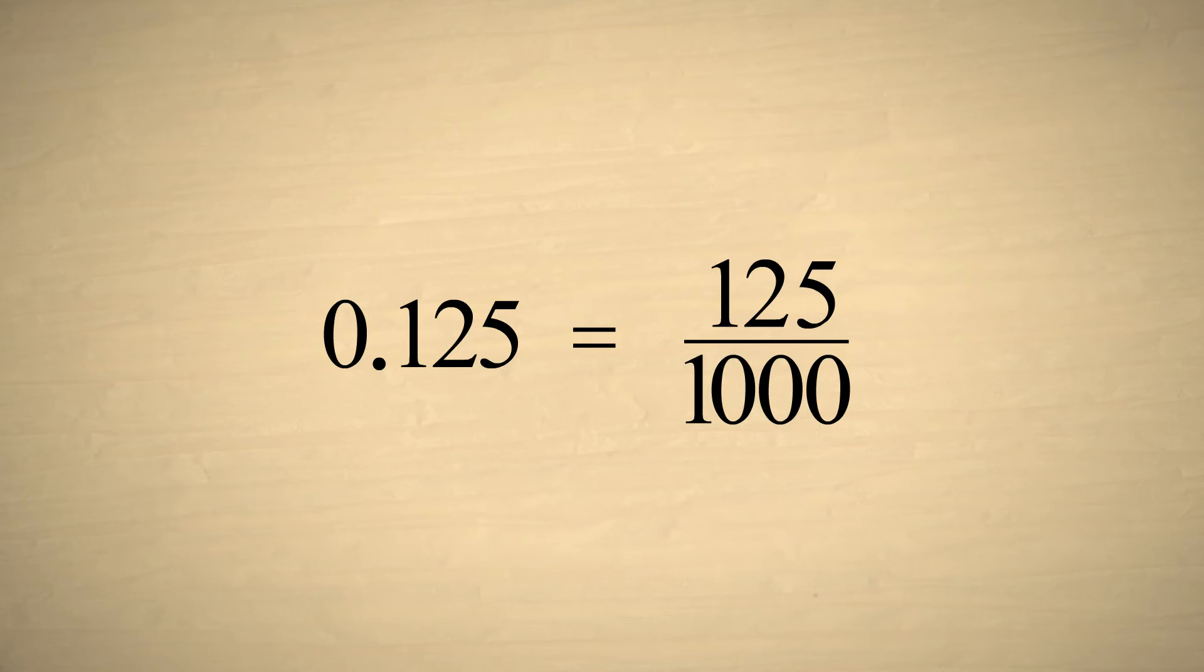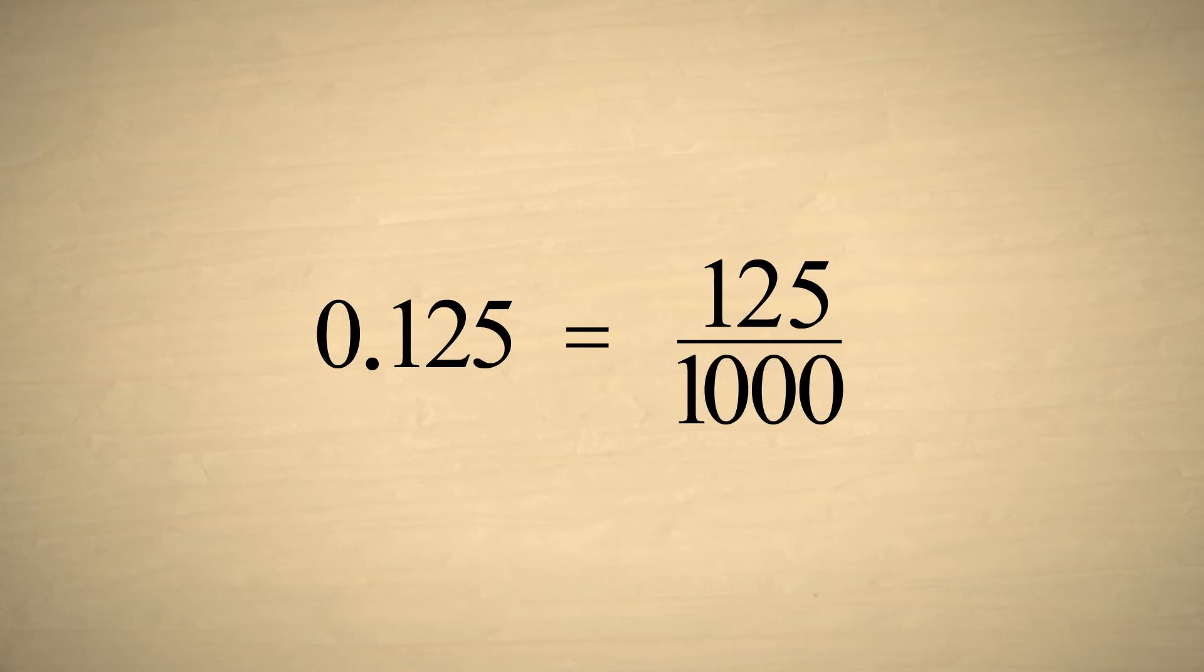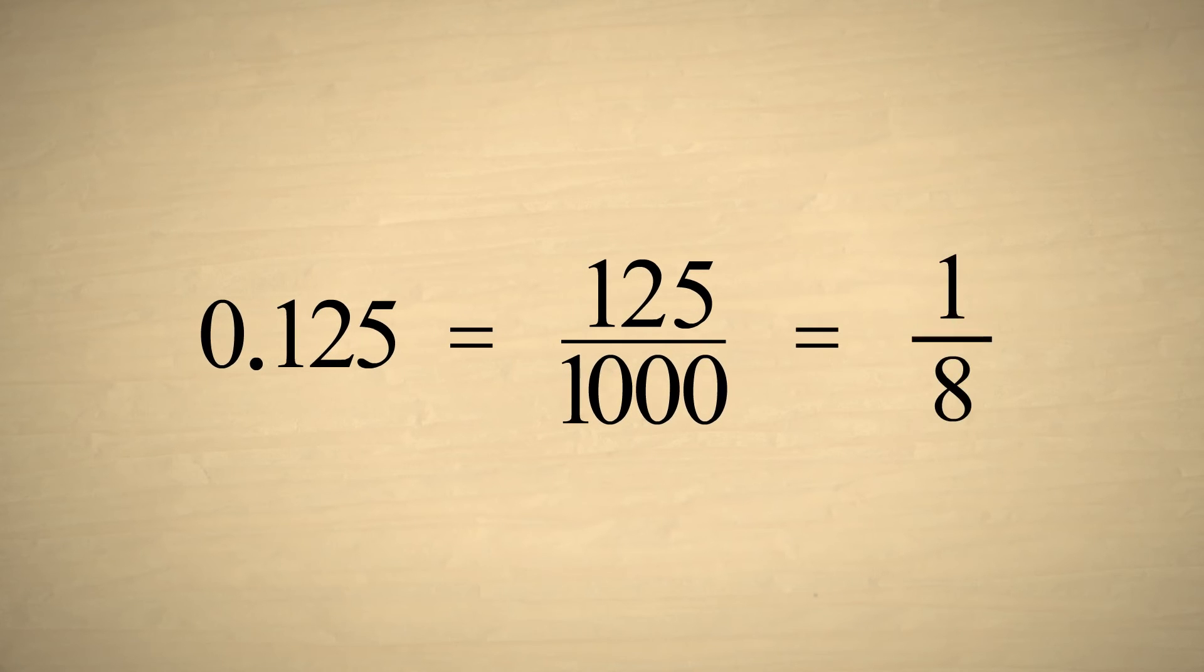Now, using the techniques we learned in our lecture on reducing fractions, we can simplify this fraction to one-eighth. So we have converted the decimal number zero point one-two-five to the fraction one-eighth.